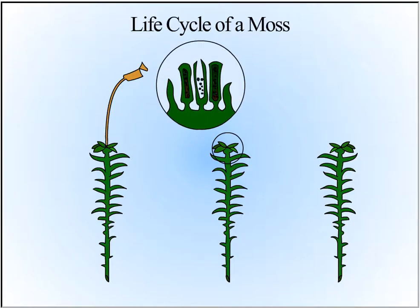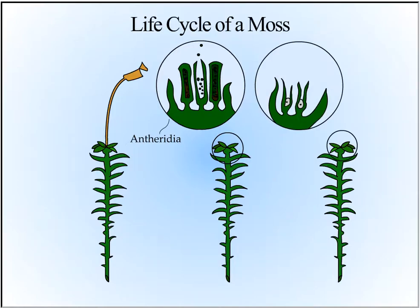Gametangia will develop at the tops of the male and female gametophyte. The male gametophyte gametangia is called the anthridia and produces sperm. The female gametophyte gametangia is called the archegonia and produces the egg. The egg and the sperm are produced by mitosis in each gametangia.